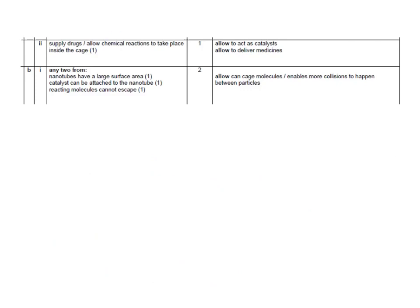Here are the answers. For why nanotubes are used as catalysts: they have a large surface area, the catalyst can be attached, and also the reacting molecules cannot escape - caged molecules enable more collisions between particles. For the second part, using the buckyball to supply drugs or allow chemical reactions to take place inside the cage is the acceptable answer. They also allow that it can act as a catalyst, even though that's not on the specification.